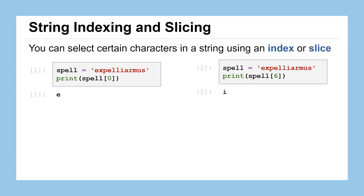So if I were to ask for spell indexed at the value of six, it's going to give me that letter I. E is zero, X is one, P is two, then E, L, L, I is at index value of six.